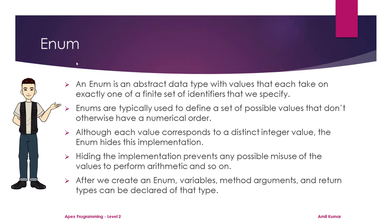After we create an Enum, variables, method arguments, and return types can be declared of that type. Enum is basically used to provide a set of possible values for a specific data type — you can create a data type out of a set of possible values, and that specific data type can then hold any of those possible values.